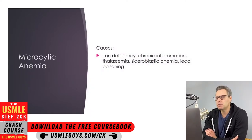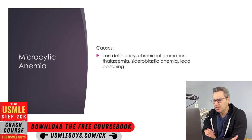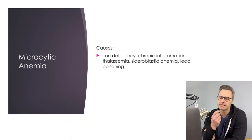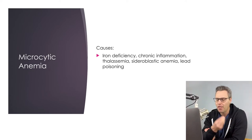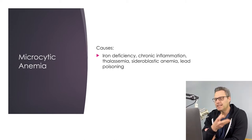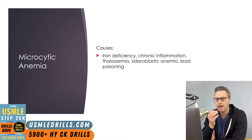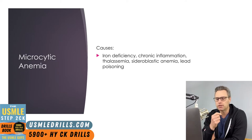Here are some of the most common causes of microcytic anemia, all a review from your Step 1 exam. These include iron deficiency, chronic inflammation — often referred to as anemia of chronic disease — and thalassemia, which has many different forms depending on which hemoglobin subunit gene is affected. They like to test thalassemias to a high level of detail on the CK and Step 1, so there's a dedicated lecture for that topic.